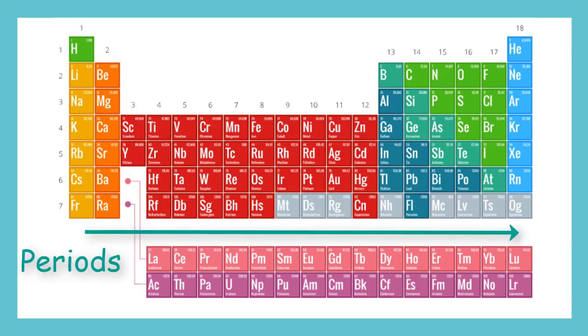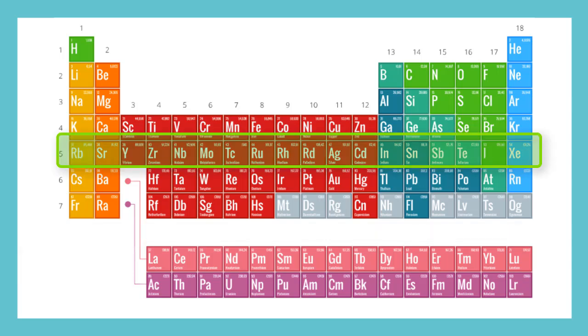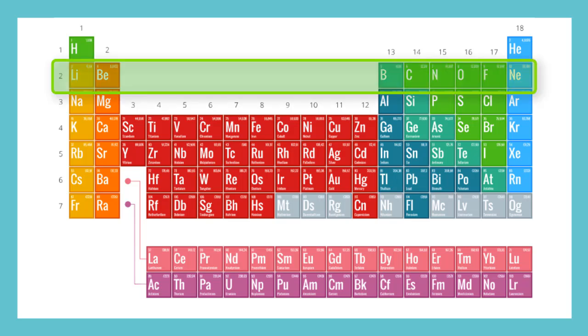Periods go across like rows. For example, here is row 5. Can you find row 2? Yep, there are a lot of empty spaces in row 2.